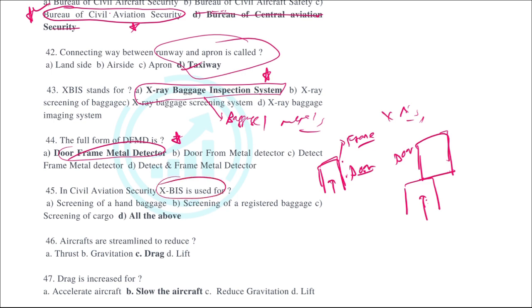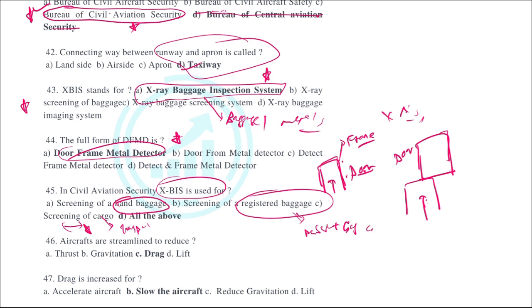In civil aviation security, XBIS is used for inspecting hand baggage, registered baggage, and cargo. Registered baggage is what the passenger has given to the airline to load into the aircraft, whereas hand baggage is what the passenger carries with them. XBIS is used to inspect all of these.